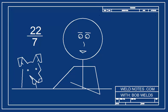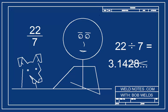Well, just do the division that the fraction is telling us. See? 22 divided by 7 equals about 3.14.